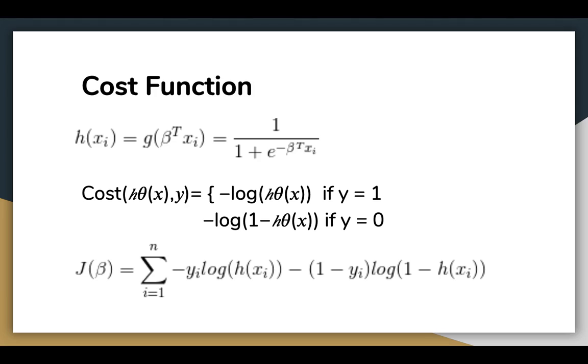This is the cost the algorithm pays if it predicts a value h theta of x while the actual cost label turns out to be y. By using this function, we will grant the convexity to the function the gradient descent algorithm has to process.